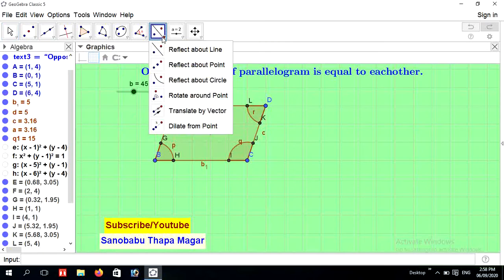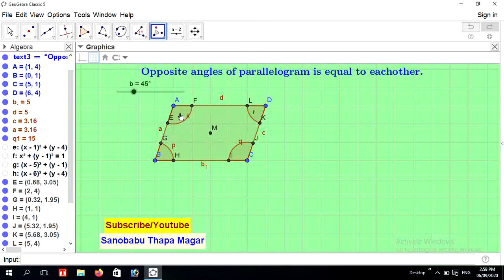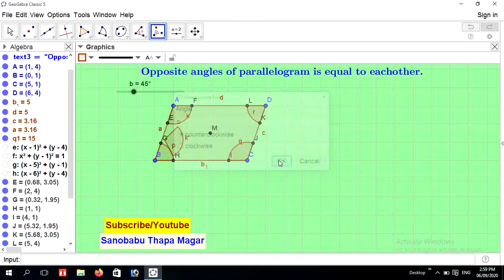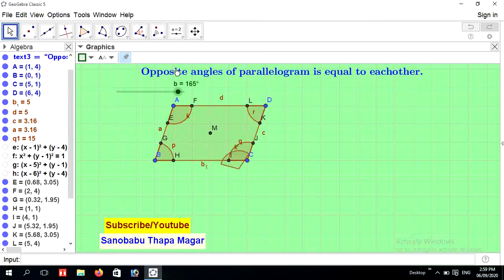Now go to reflect option and place rotate around point. For that select the angles and point M, angles and midpoint, and slider name is B. Now move the slider. A and C are opposite angles. Here angle A is accurately fit in angle C. That's why angle A and C are equal with each other.